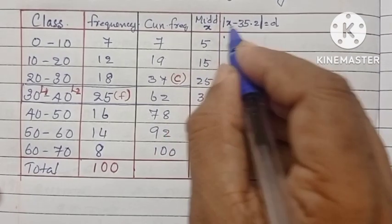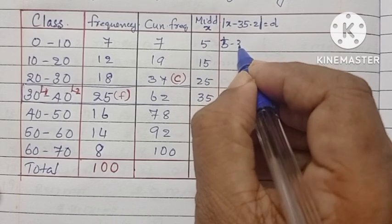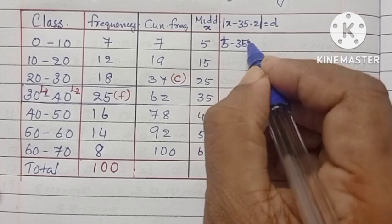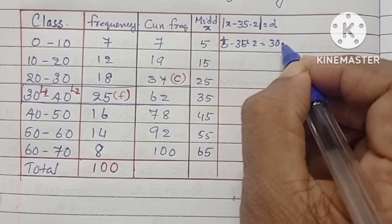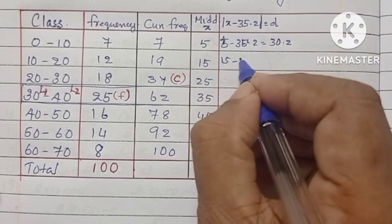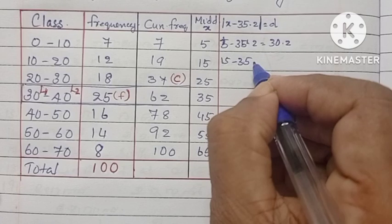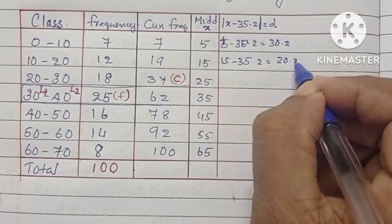After finding the X, we have to find the modulus of X minus median. Median is 35.2. Therefore, 5 minus 35.2 is equal to 30.2. Next one is 15 minus 35.2. The answer is 20.2. Similarly, we can find all values.